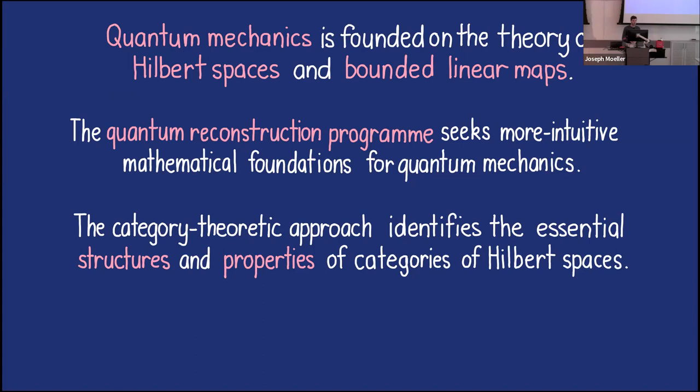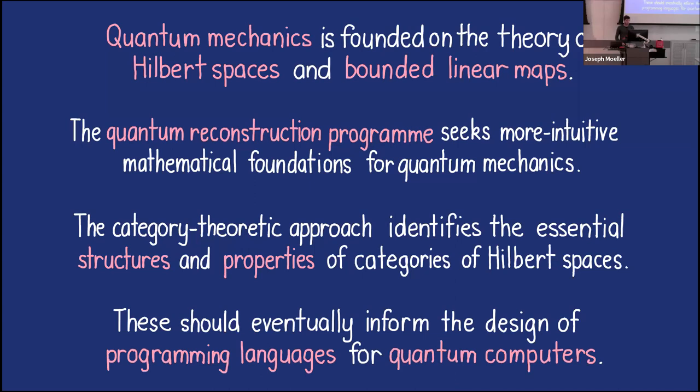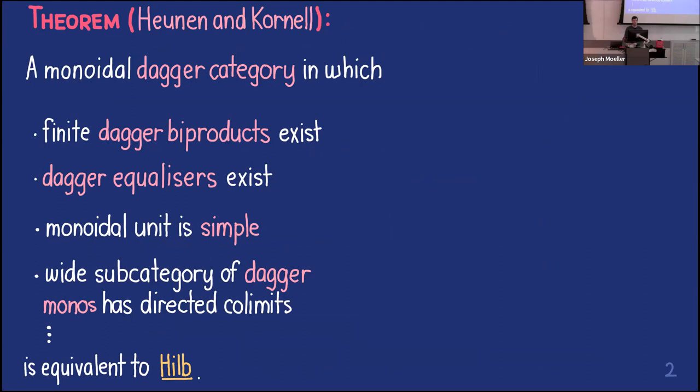There's this thing called the quantum reconstruction program, which is about finding more intuitive mathematical foundations for quantum mechanics. Often people are looking for axioms that have some kind of physical interpretation — something more intuitive. And there's this category theoretic approach, which started about 20 years ago, focused on categorical structures like dagger categories and monoidal categories. Some of these ideas should eventually inform the design of programming languages for quantum computers.